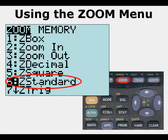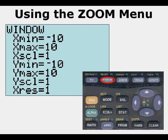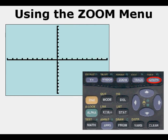Zoom standard. Here's our standard viewing window. X min negative 10, X max 10, X scale 1, Y min negative 10, Y max 10, Y scale 1. And this is what the standard viewing window looks like.